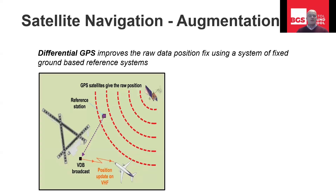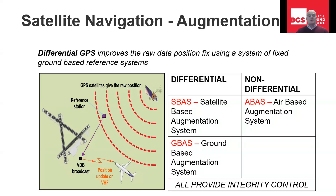Here's an example — this is actually GBAS. With a ground-based augmentation system, the reference station, which has been very accurately surveyed, picks up the raw data from the satellites, looks to see if there's any problems, makes any corrections, formulates it as a broadcast, which is then beamed up to the aircraft on VHF — known as a VDB. That is definitely meeting the definition of differential GPS. The other one is SBAS, which also uses fixed ground-based reference systems — it's just a wider range augmentation system than GBAS. On the right-hand side we've got ABAS, which is non-differential.